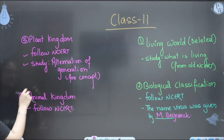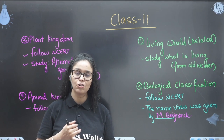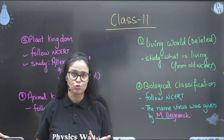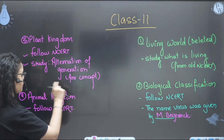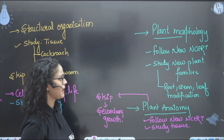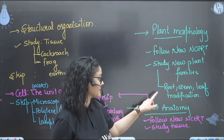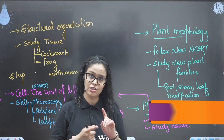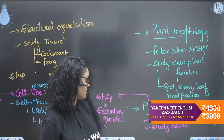For plant kingdom, follow NCERT. Alternation of generation is deleted from the new NCERT, but study it to build your concept of meiosis, mitosis, and gametophyte for the NEET exam. For animal kingdom, follow NCERT. For plant morphology, follow NCERT - new plant families are added, study them. Root, stem, and leaf modifications are important topics to study from this chapter, following the new NCERT.